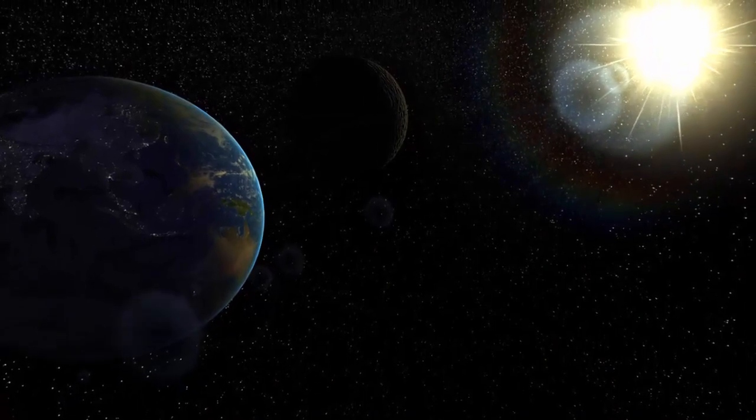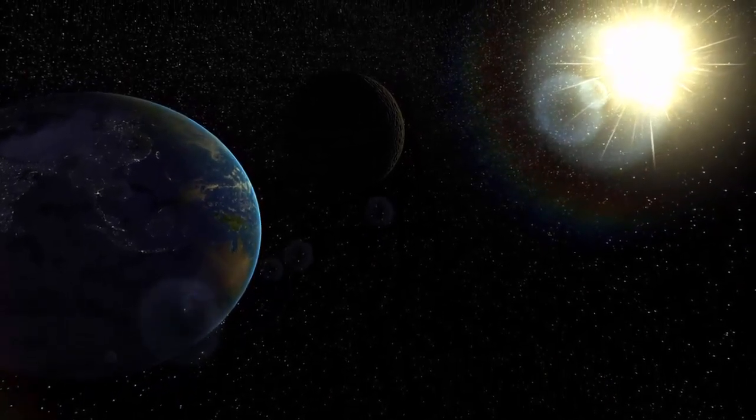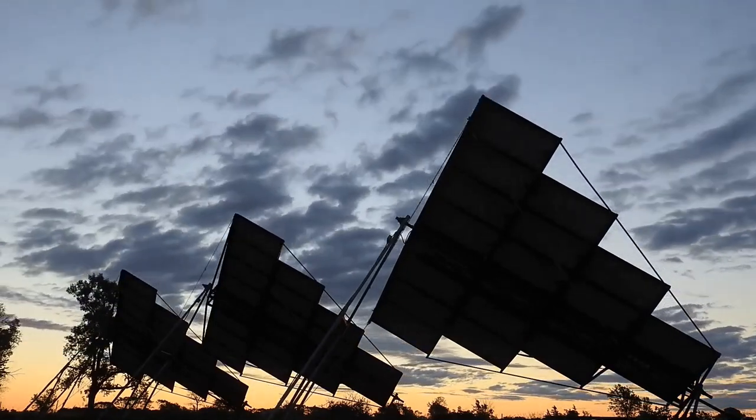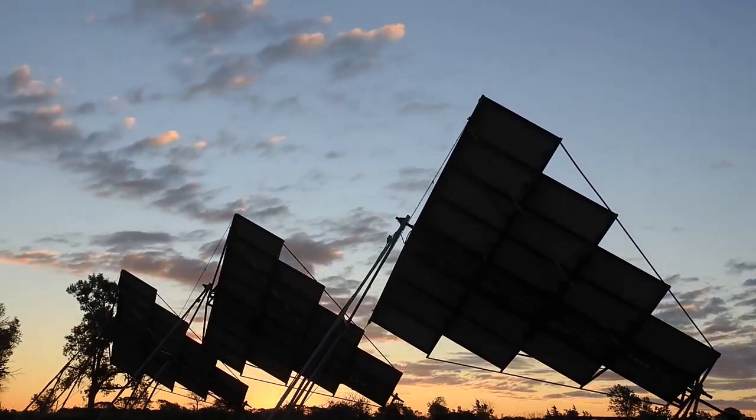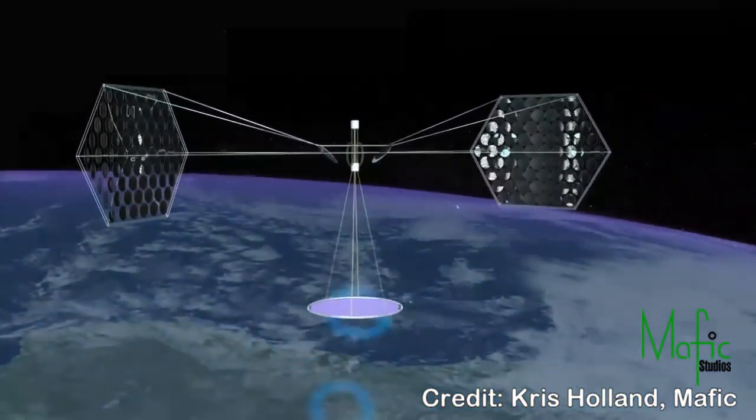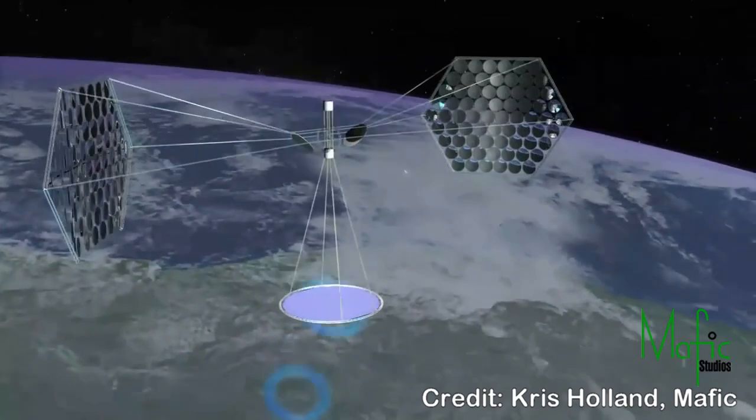A lot of energy hits Earth, and a lot is reflected away or blocked by clouds. Plus any land devoted to solar power panels is land you can't use for something else, so folks often discuss the idea of putting solar panels in orbit and beaming that energy down.